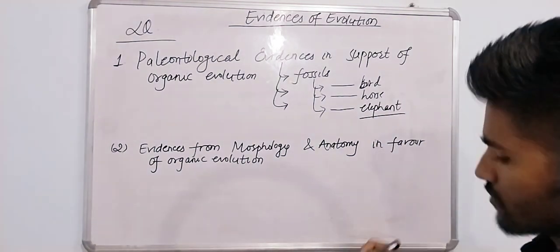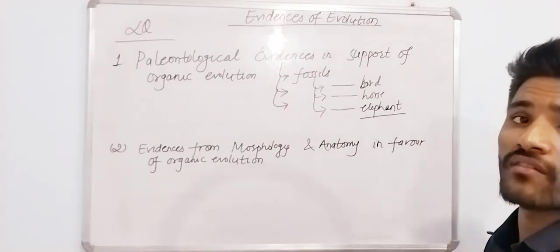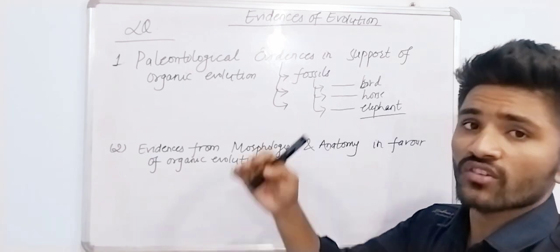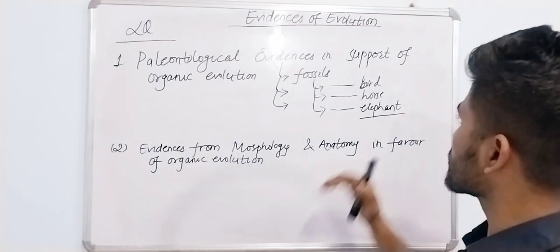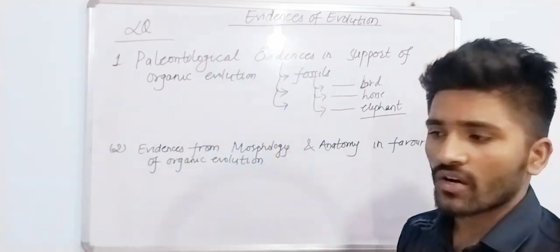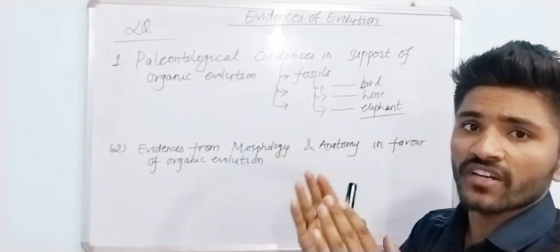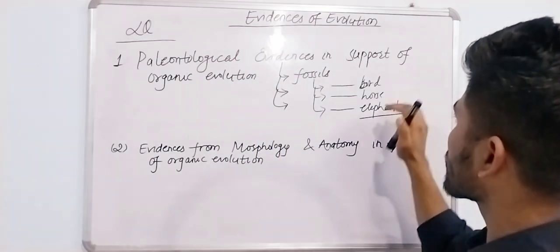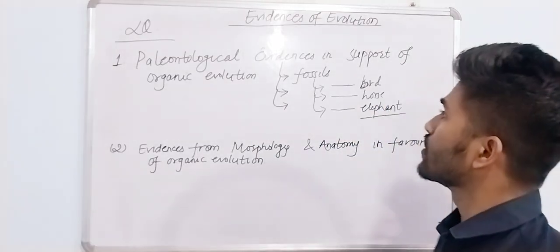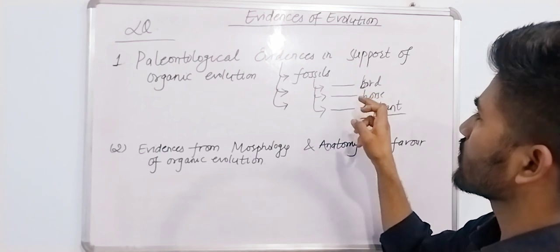The origin of elephant and the origin of horse from Eohippus to modern horse through intermediate horses. The bird's evolution can also be explained through fossils.